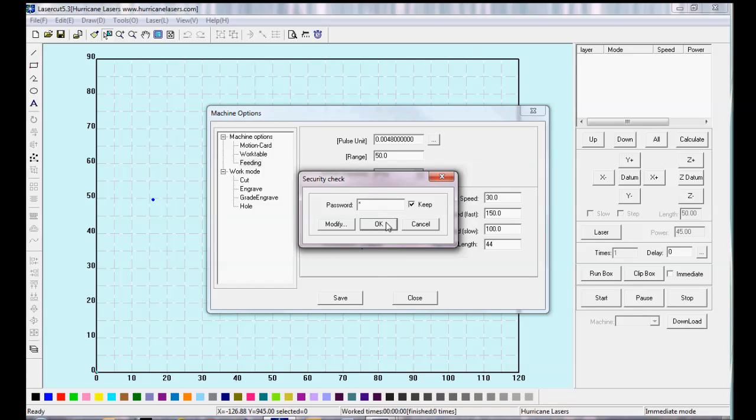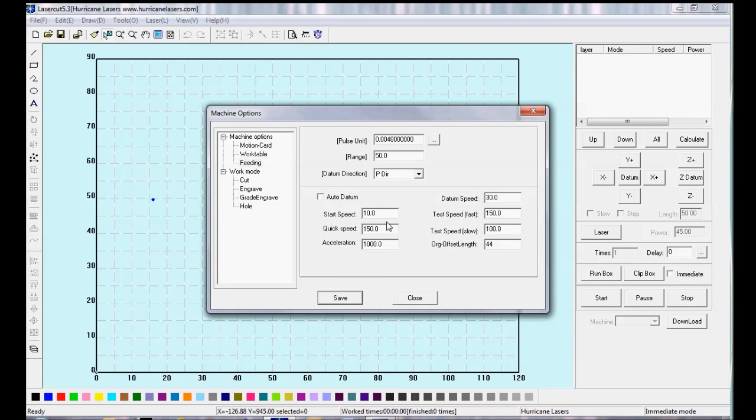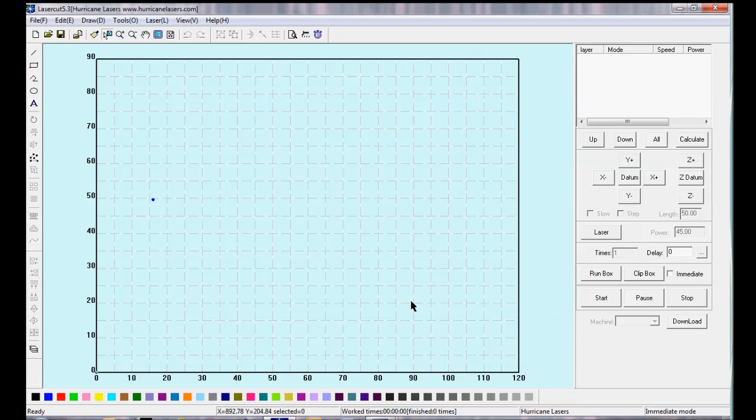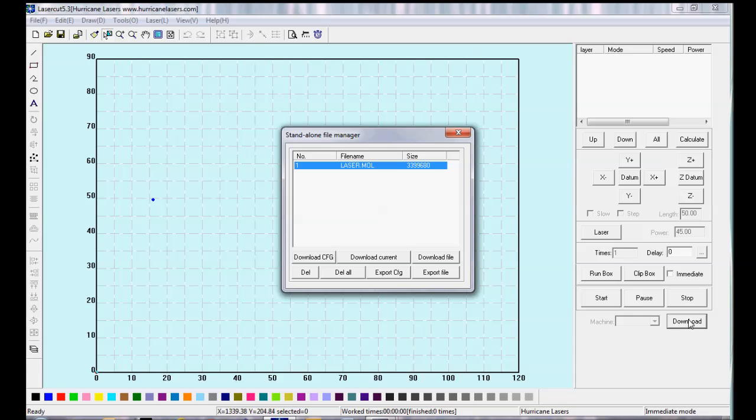Click Save and OK on the default password. Click Close. Then click on Download, Download Config, or Download CFG, and then OK.